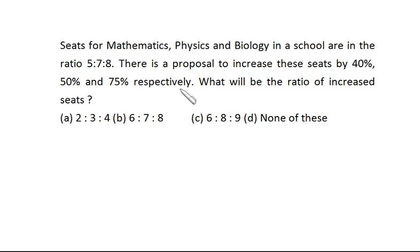40% is actually 2/5, 50% is half, and 75% is 3/4. Suppose as of now the ratio is 5:7:8, that is 5x, 7x, and 8x. This is Maths, Physics, and Biology.